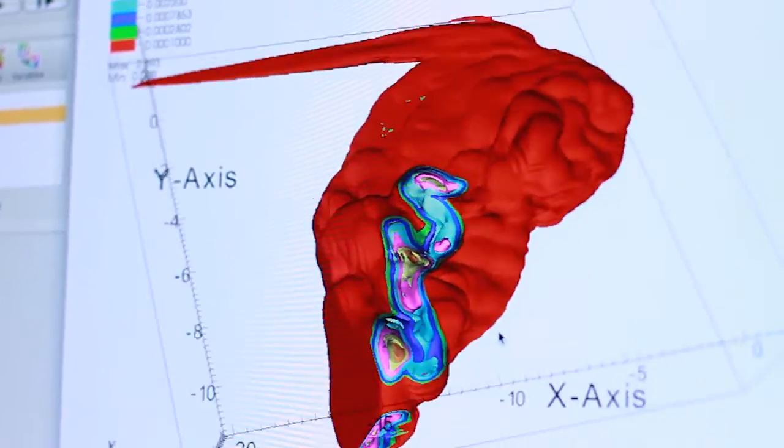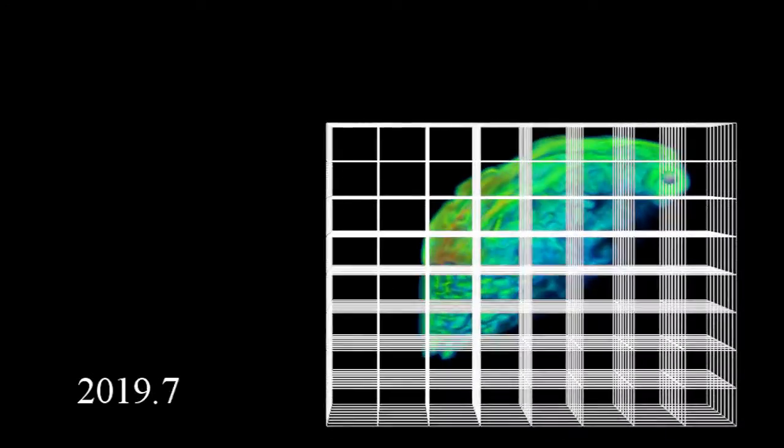What we're actually trying to do is use computers to simulate how the gas goes through this process of falling in, creating the radiation that the observers are seeing, and make predictions about things that might tell us more about how black holes form in the first place.